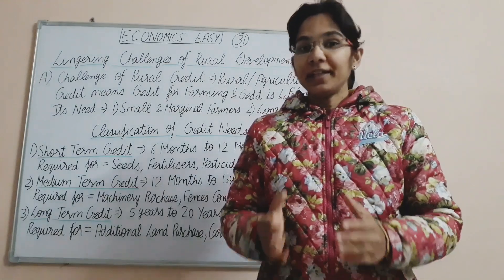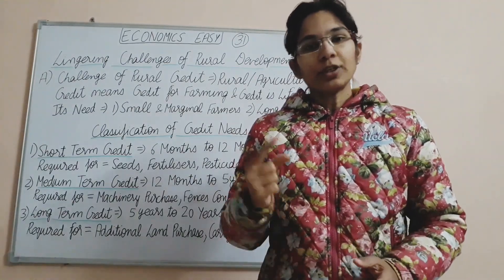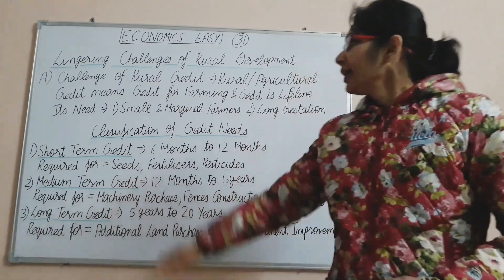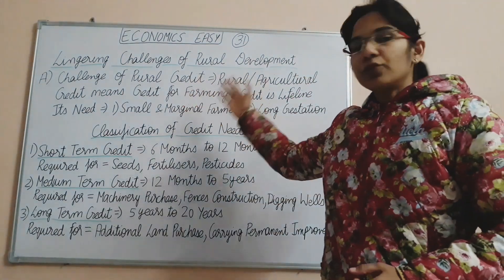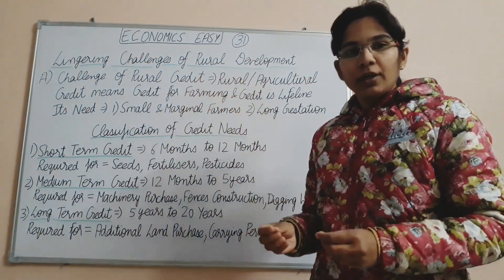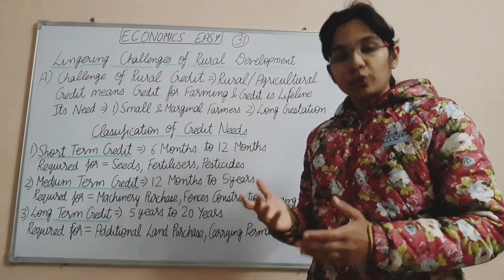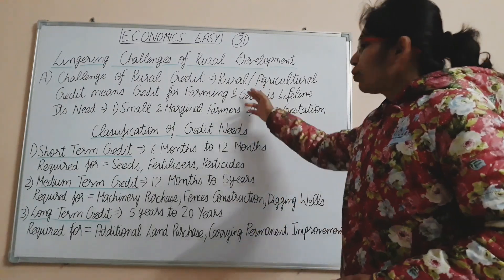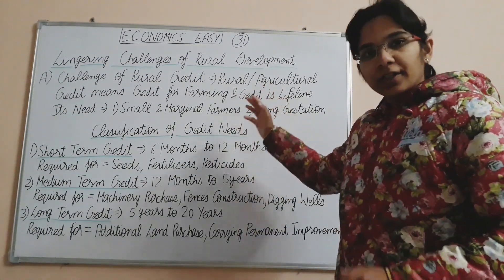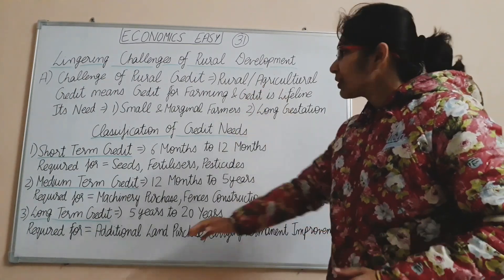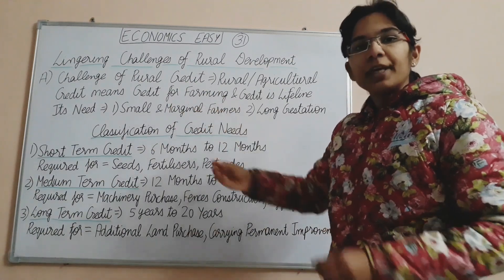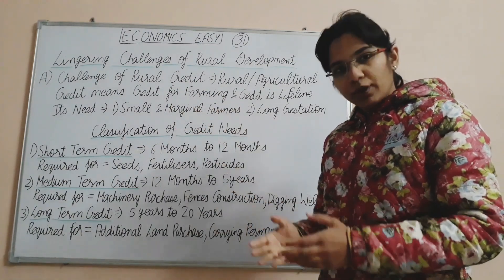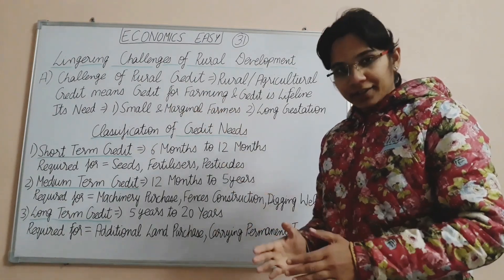If we look at what are the lingering challenges of rural development, the first part is rural credit. Rural or agriculture credit is one and the same thing — it means the credit for farming. The credit that the farmer takes for farming is called rural credit or agriculture credit.